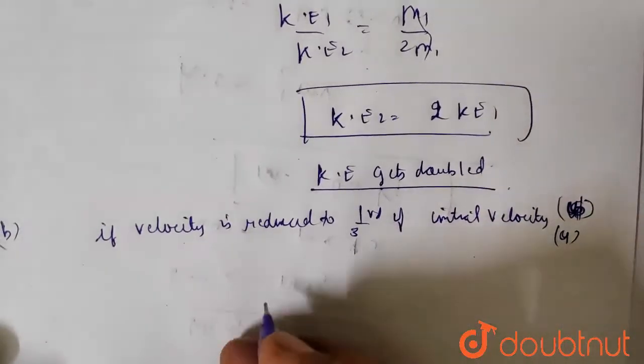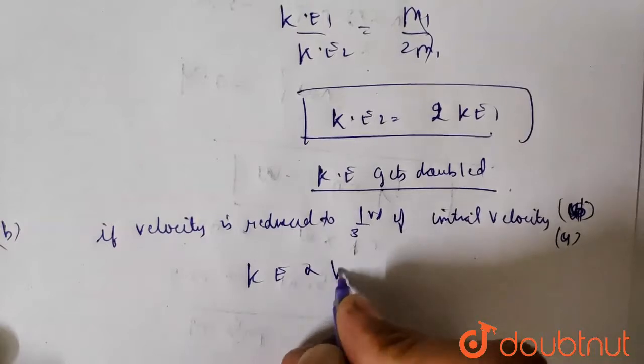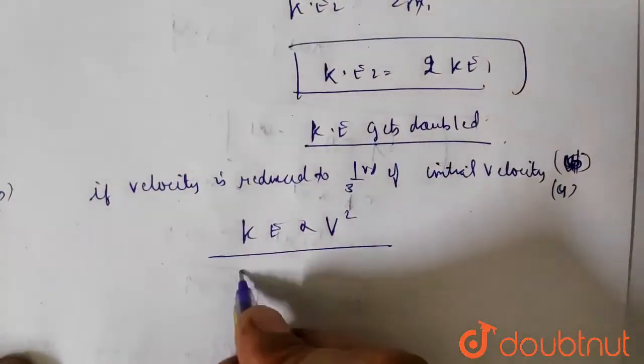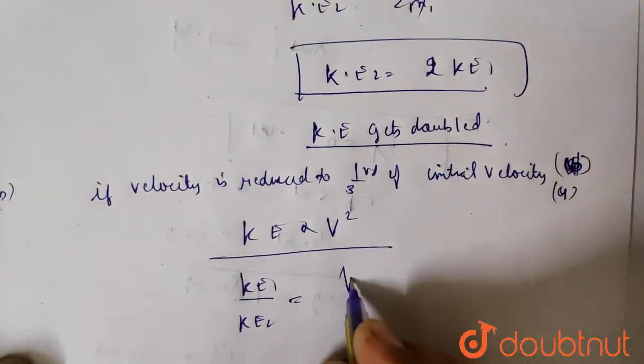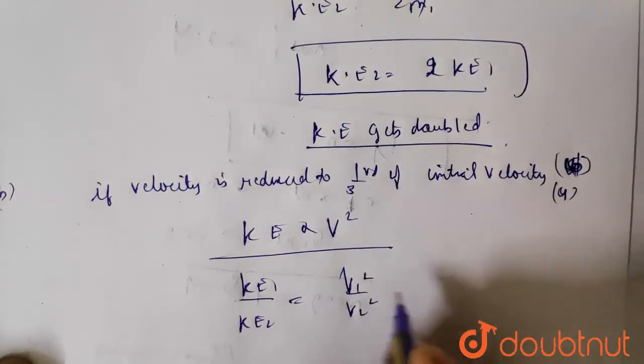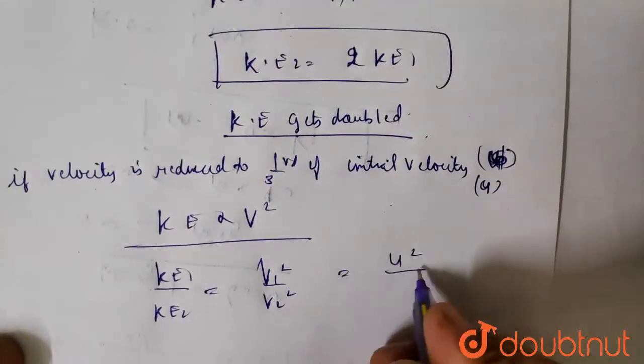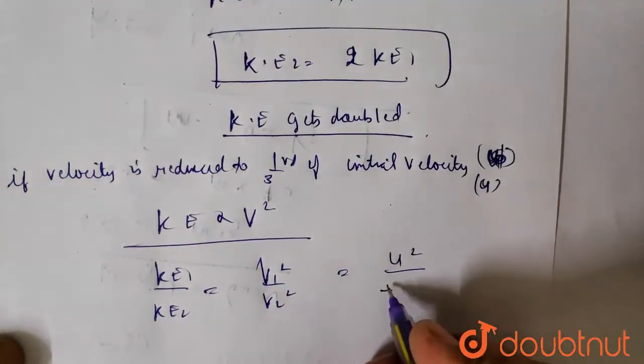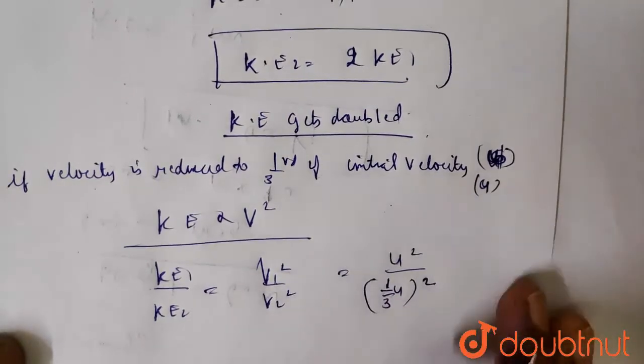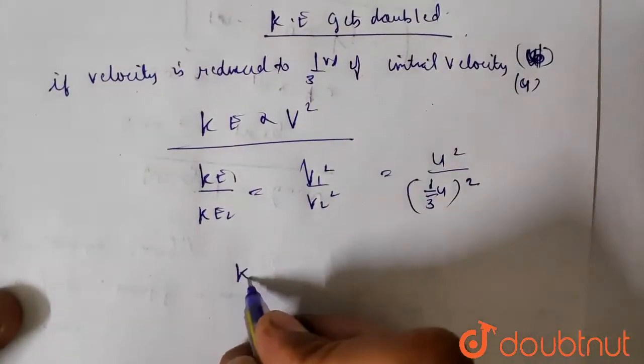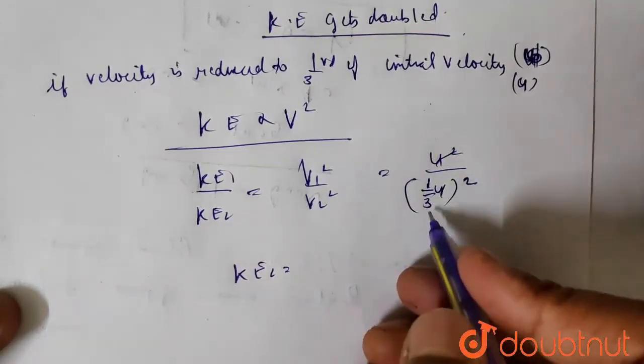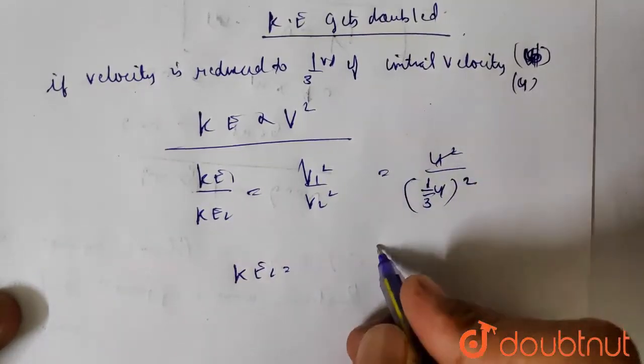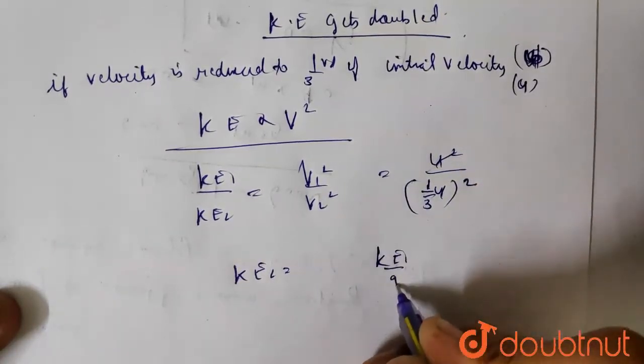KE is proportional to v squared, so KE1 upon KE2 equals v1 squared upon v2 squared. Now v1 squared is u squared, v2 is one third u squared. KE2, u square cancels. One by three squared is one by nine. So KE2 equals KE1 upon 9.